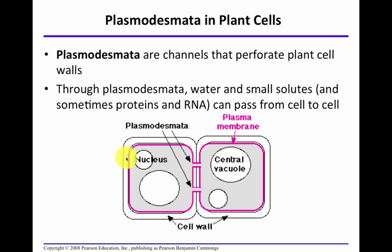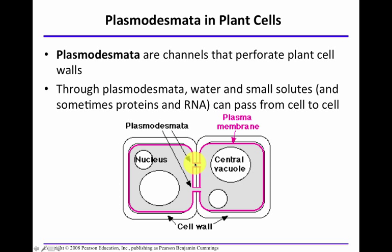Plasmodesmata are channels that perforate, meaning put holes in, plant cell walls. Between two adjacent plant cells, plasmodesmata connect and allow the cells to communicate. Through these channels, water, small solutes, and sometimes proteins and RNA can pass from cell to cell. So if you were asked how plant cells communicate, plasmodesmata are one key answer.